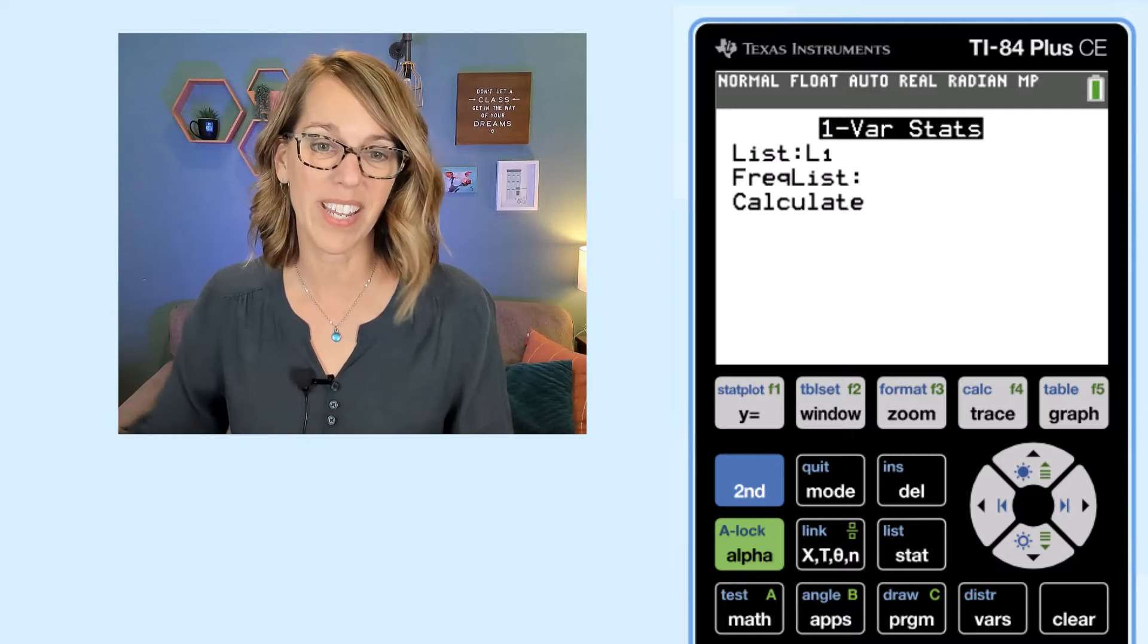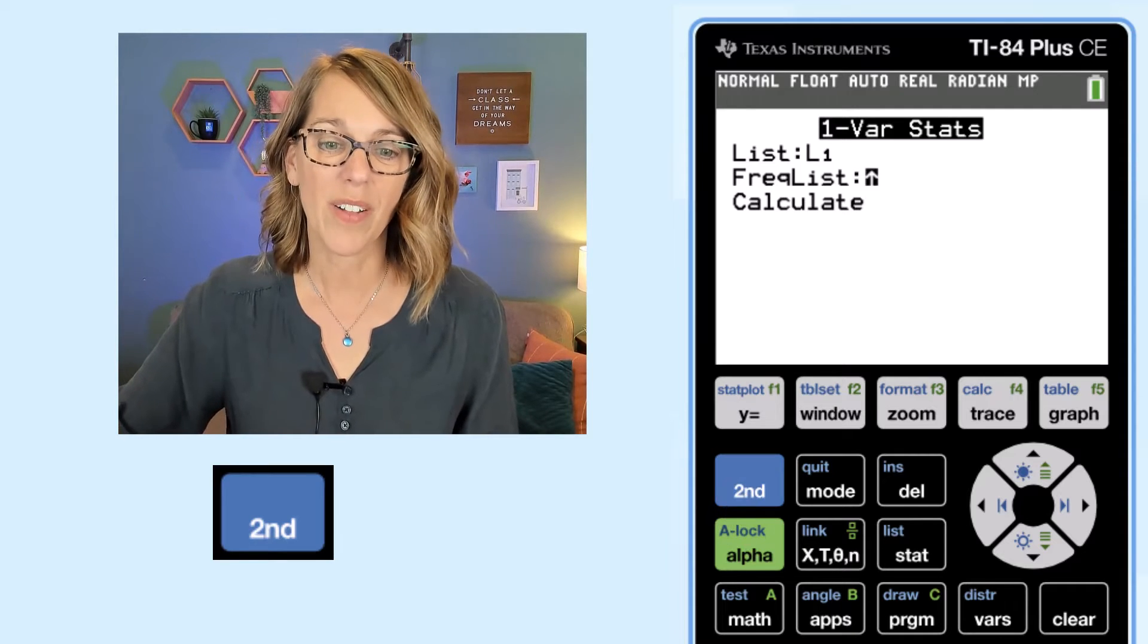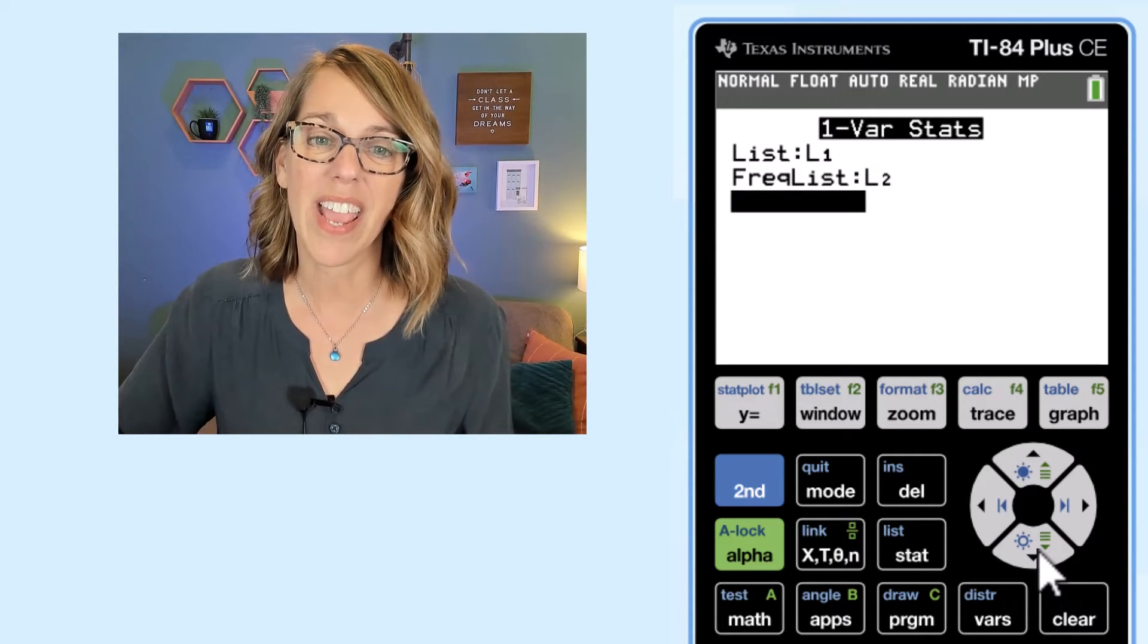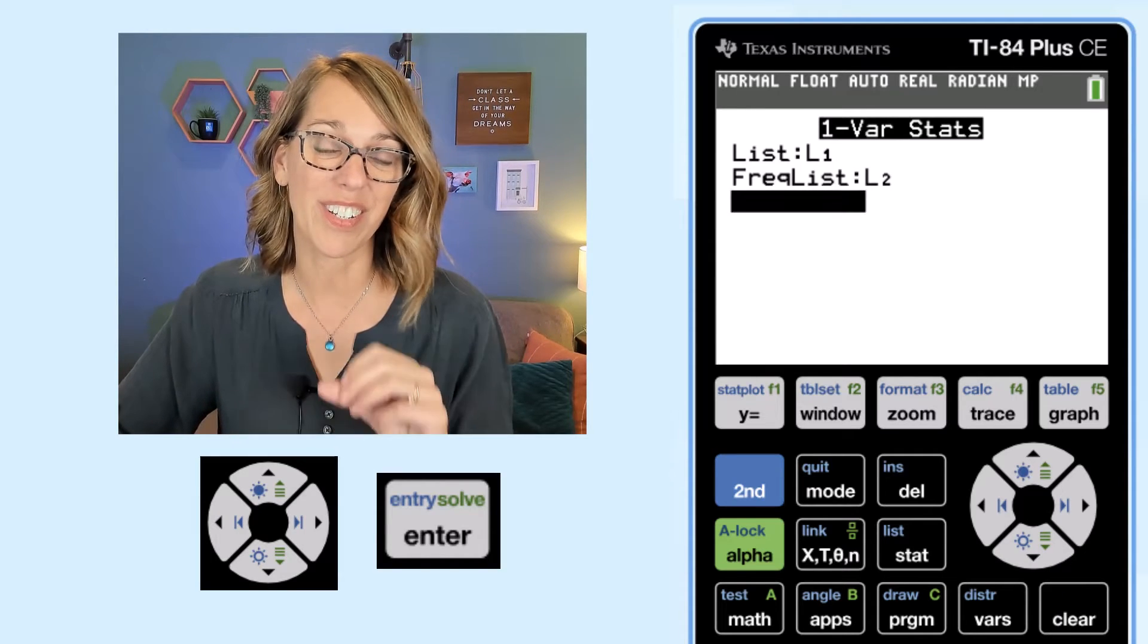That's where I put my frequencies. So I want to hit my second followed by the number two to get to the L2 list name. And then I'm going to arrow down and hit enter to calculate.